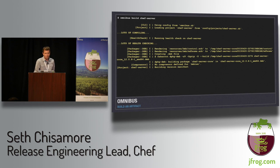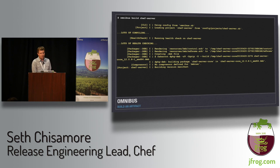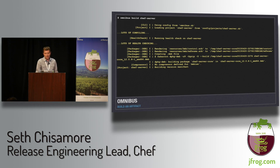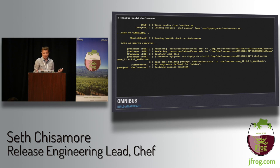Omnibus supports multiple packagers out of the box — the packager is determined by the build platform. This was built on Ubuntu, so we produce a .deb. We could produce an RPM, MSI, Solaris archives, BFF for AIX. We fall back to MakeSelf, which is a self-extractable archive.